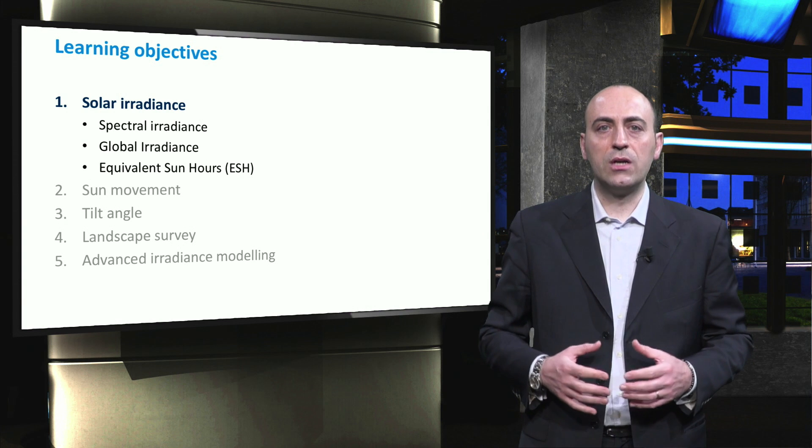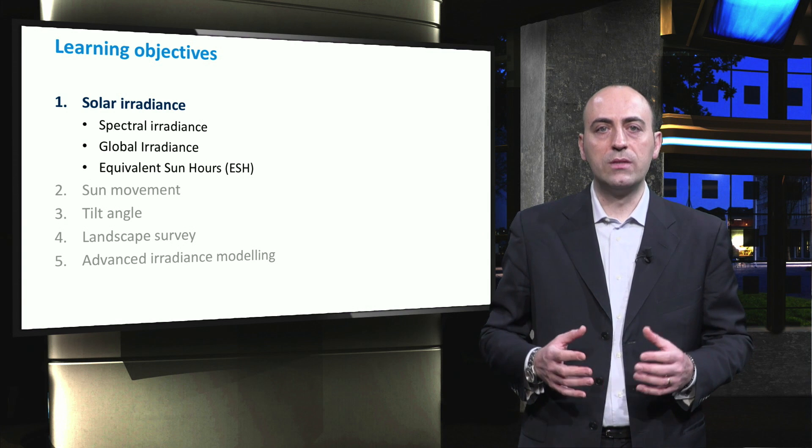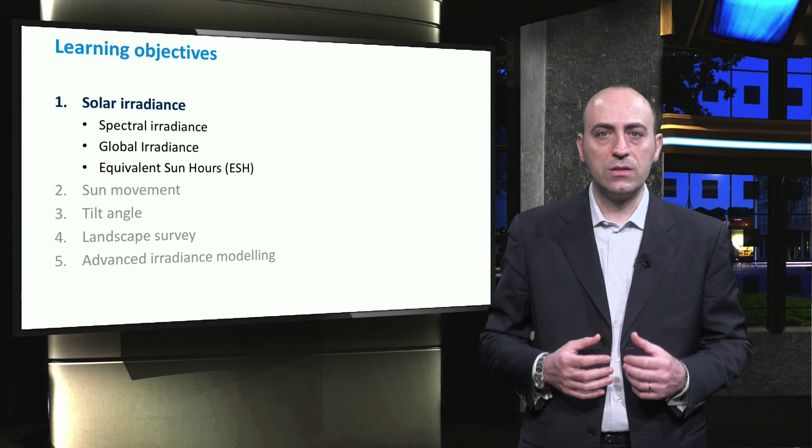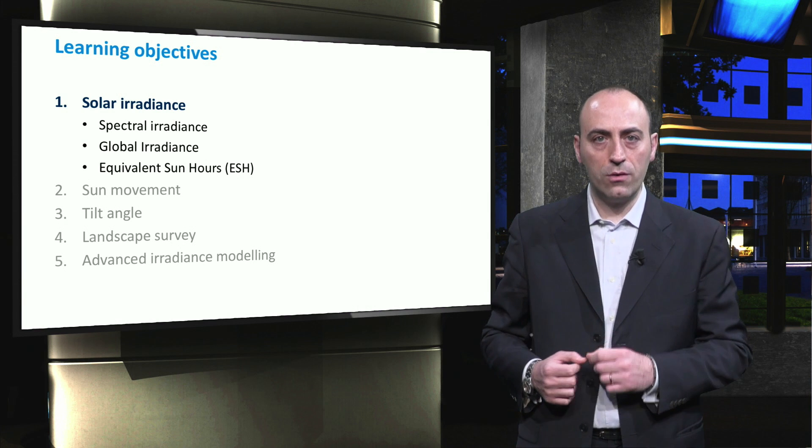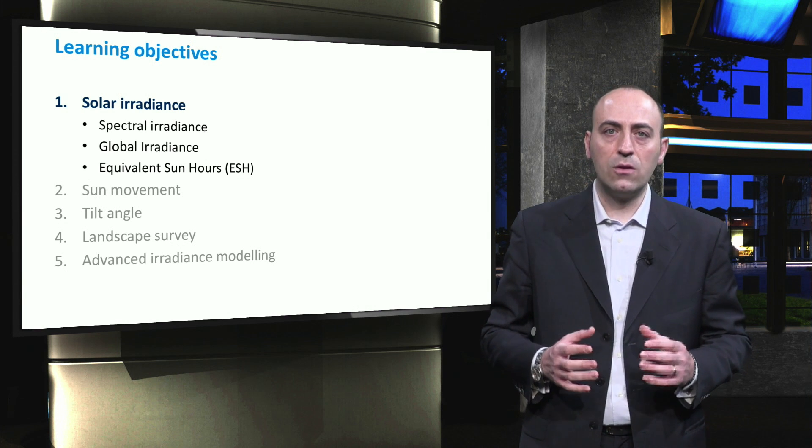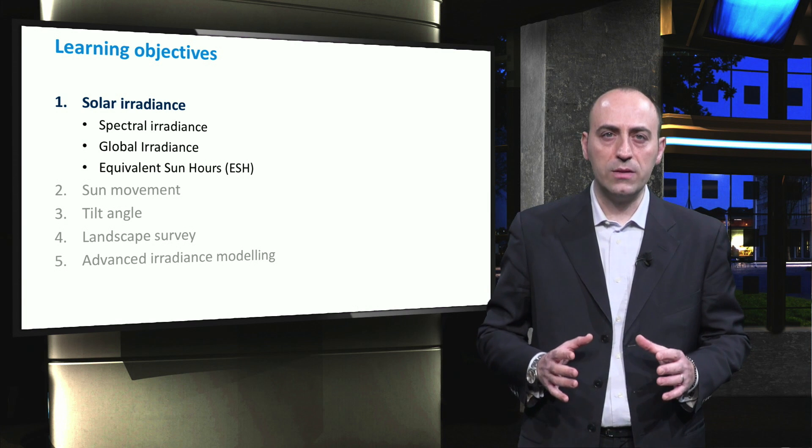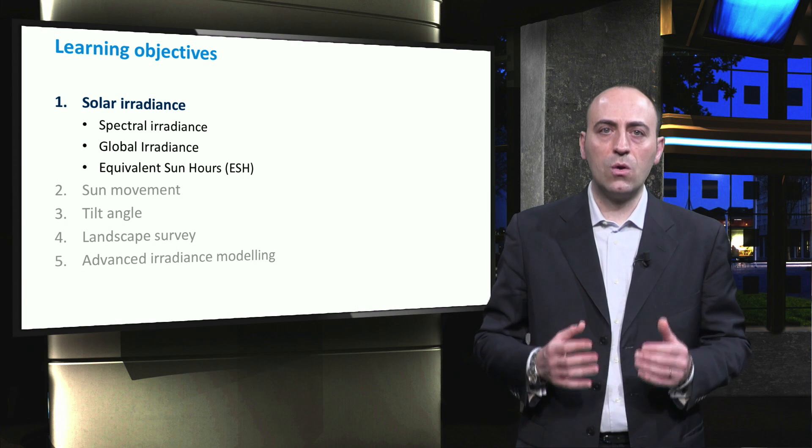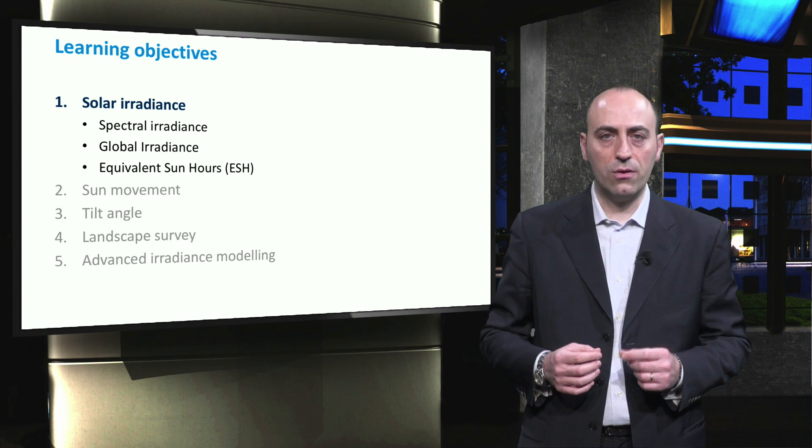In this video, we will start with the solar irradiance. We will discuss some basic properties of our Sun and the Sun's spectral irradiance falling on Earth. Then, we will split the global irradiance into several components. Finally, we will introduce the concept of equivalent sun hours for a certain location on Earth.